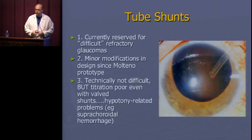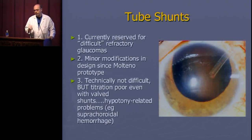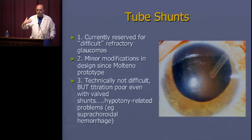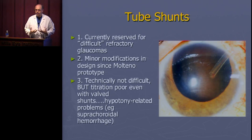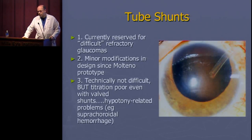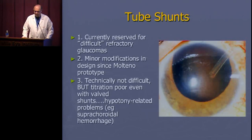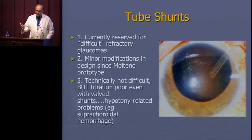Tube shunts were originally developed for refractory glaucomas like neovascular glaucoma. They've evolved in terms of how we place and tie them off to avoid dropping pressure to zero, which can cause suprachoroidal hemorrhage. With the original valveless tubes, pressure would drop to zero. Now we tie tubes off and allow the suture ligature to dissolve gradually using Vicryl, or we use valve shunts like the Ahmed, which are safer. Nevertheless, it remains a high-risk procedure with risks of hypotony, choroidal effusion, suprachoroidal hemorrhage, flat chambers, or elevated pressure while waiting for ligature dissolution.